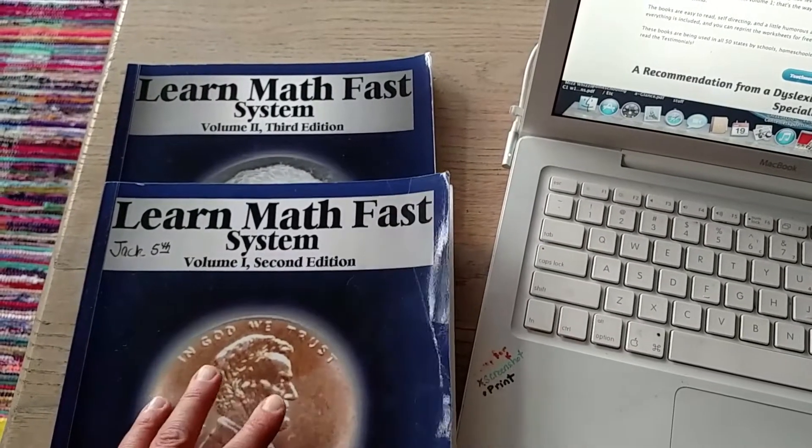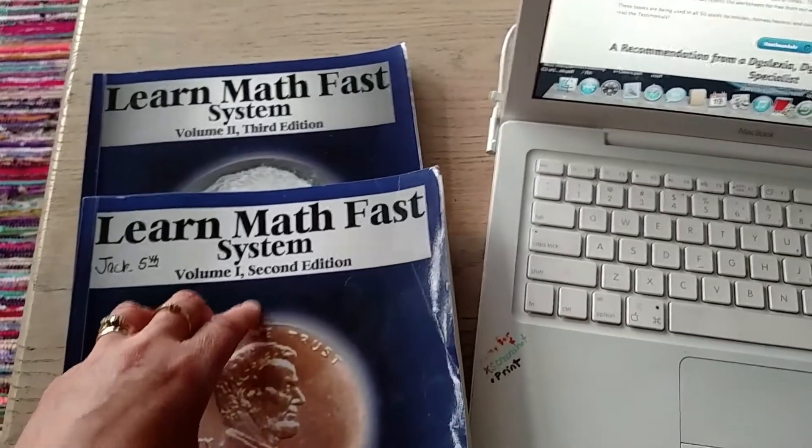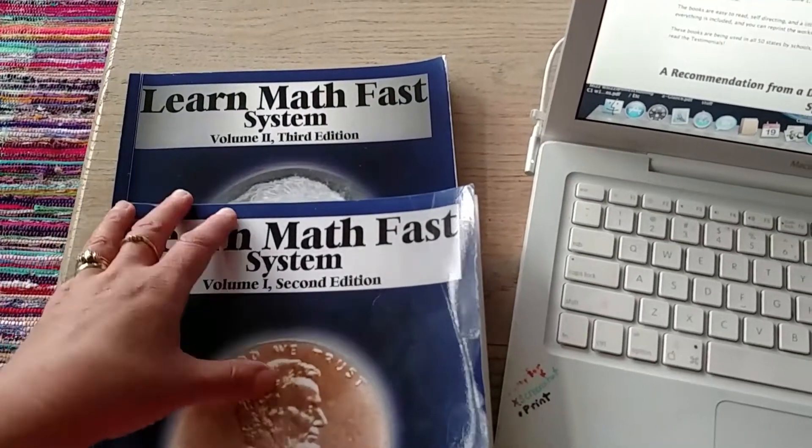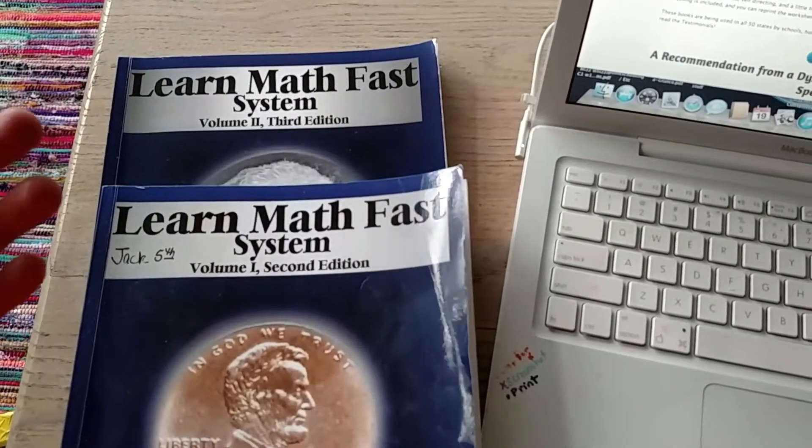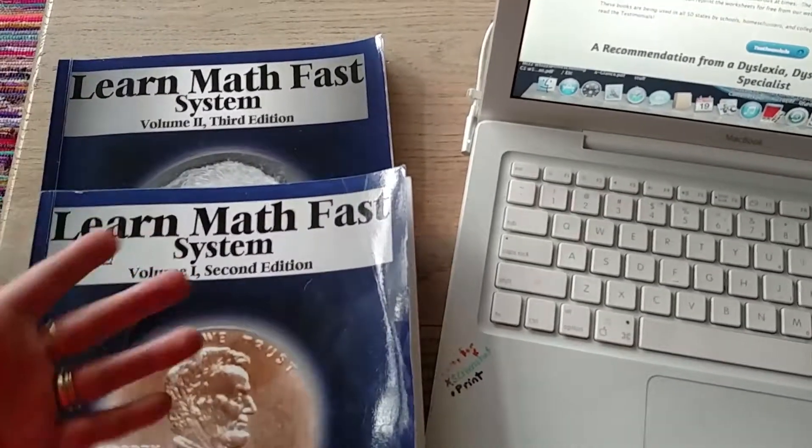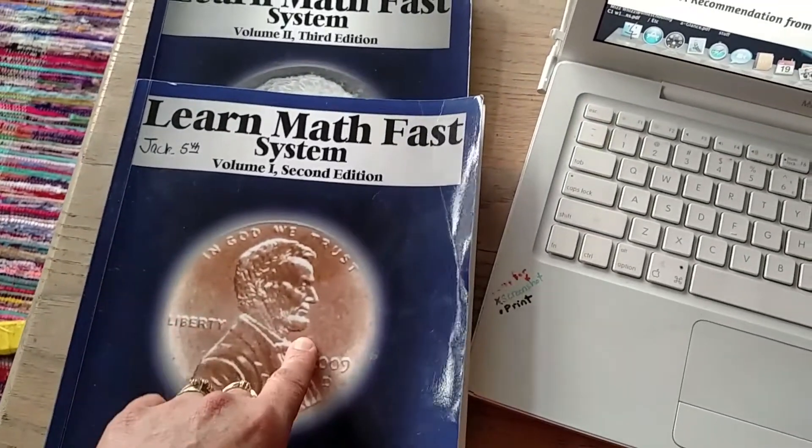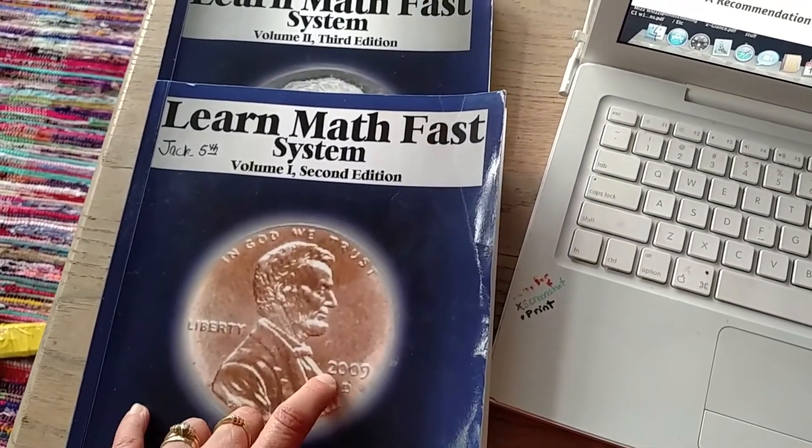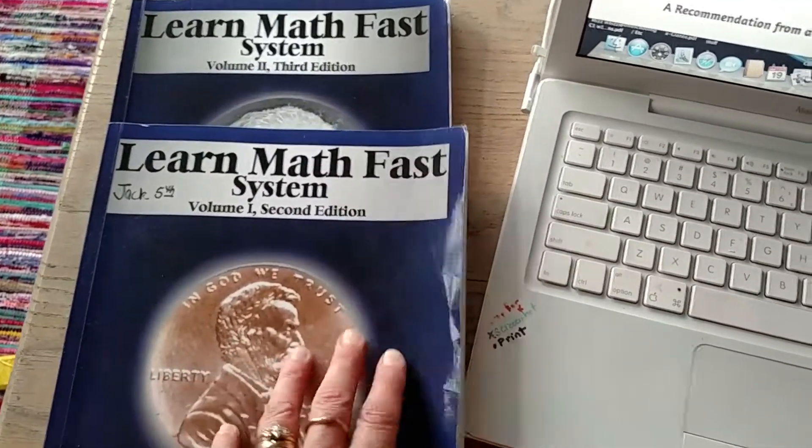So I think there's about 7 books, 7 volumes and it's recommended that you start at the beginning even if you already know those concepts, but you could skip like the adding and subtracting if you knew that. So if you felt like volume 1 was going to be too easy you could skip it. But we started at the beginning and we worked our way through.